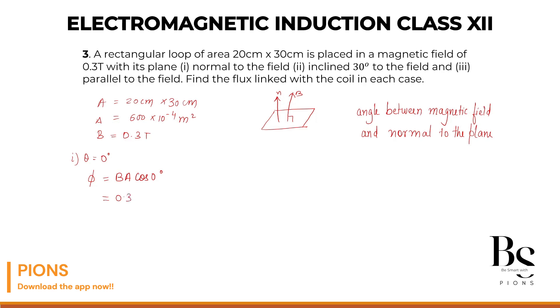Correct. So what is B? 0.3. What's A? Area is 600 into 10 to the power minus 4. 6 3 is 18. Okay. So let's write here 1.8. Or 1.8 into 10 to the power minus 2. What's the unit of flux? It's weber. Or you can write it tesla meter square. Right.